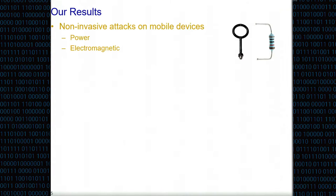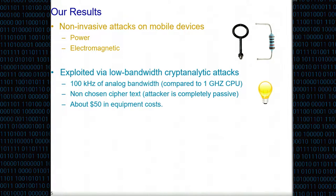Let me quickly go over our results. We were able to attack these devices using the two classical side channels: power analysis and the electromagnetic channel. We exploited these channels by coming up with low bandwidth cryptanalytic techniques. What's nifty about our techniques is we only need around 100 kilohertz of analog bandwidth to achieve key extraction from a phone running at 1 gigahertz. Our measurement speed is five orders of magnitude less than the target's execution speed, yet we're recovering keys. These are non-adaptive chosen ciphertext - we only passively monitor the target's leakage. Because the bandwidth is so low, we only need around $50 of equipment.